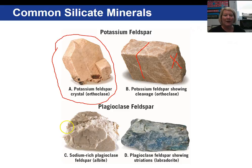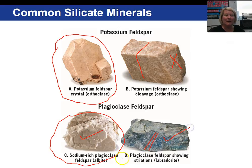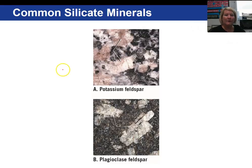Below we have our plagioclase feldspar, and this is a sodium rich end member called albite. One of the features that plagioclase feldspar may exhibit on certain cleavage surfaces are lines called striations, and that is an indication that you have a plagioclase versus a potassium feldspar. This sodium rich member, on the other hand, has sodium and calcium in it. Here is a view of potassium feldspar shown in pink versus plagioclase feldspar — these are views under the microscope.